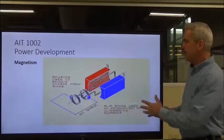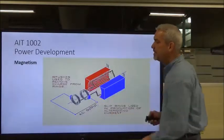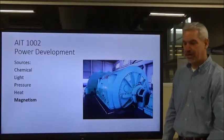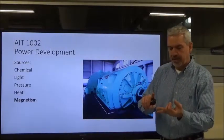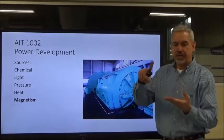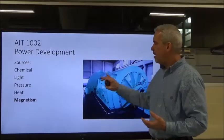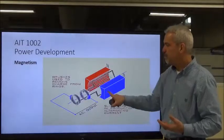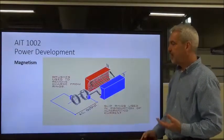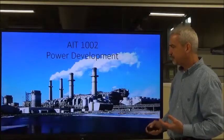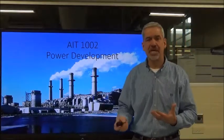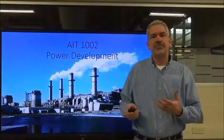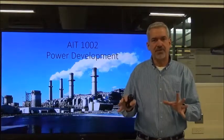This simple little model is the very principle that major power plants use — whether hydroelectric, coal-fired, or nuclear. They all use a large alternator built off this principle, and it creates an AC voltage. That's what comes out of our power plants: AC voltage.